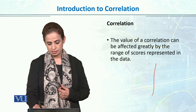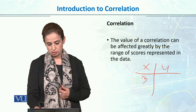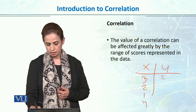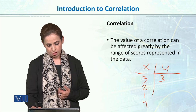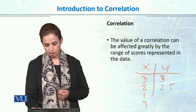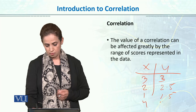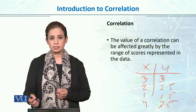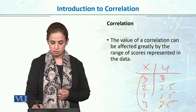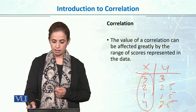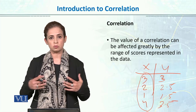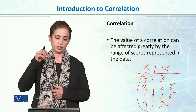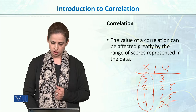The value of the correlation can be greatly affected by the range of scores represented in the data. For example, if the studying hours range from 1 to 4 and GPA ranges from 1.5 to 4, the variability in the scores affects the correlation coefficient. In both the X and Y variables, the variability or the range of the scores actually affects the correlation coefficient.